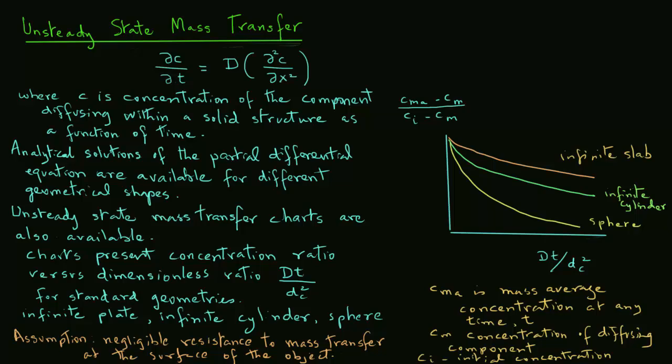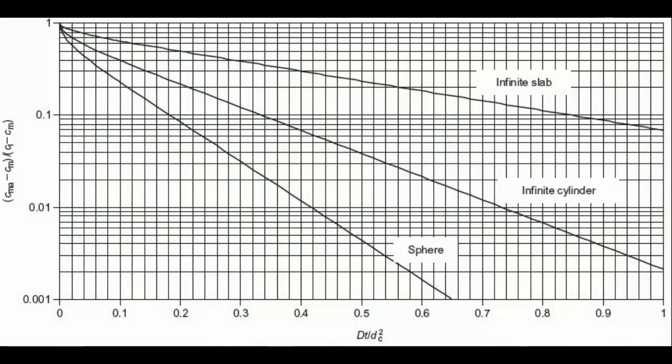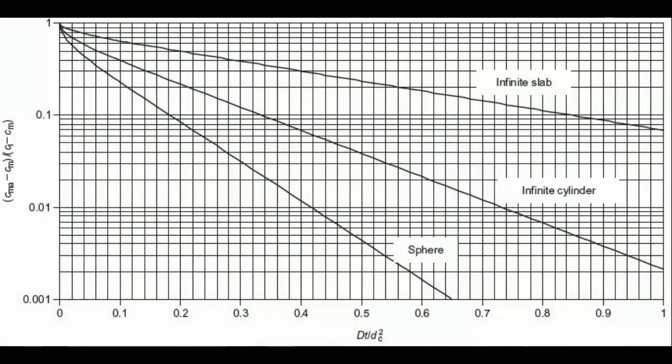We can look at an actual chart shown here. We have the concentration ratio on the y-axis, which is on a log scale, and the dimensionless ratio for time Dt/Dc² on the x-axis. We have lines for infinite slab, infinite cylinder, and a sphere.